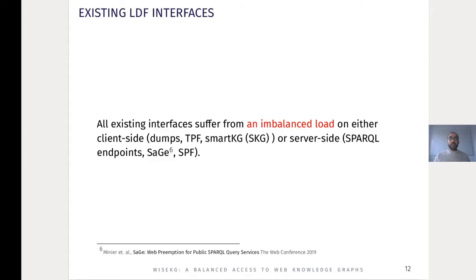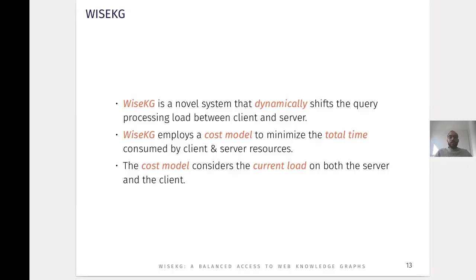To this end, all existing interfaces suffer from an imbalanced load on either the client side — such as data dumps, TPF, and SmartKG — or the server side — such as SPARQL endpoints, Sage, and SPF. In this paper we present YSKG, which is to the best of our knowledge the first work that dynamically shifts the query processing load between clients and servers. YSKG employs a cost model to minimize the total time consumed by the client, considering the current server load, client capabilities, estimation of the necessary data transfer, and network bandwidth.